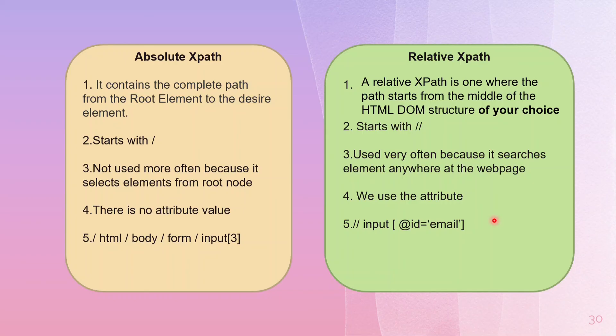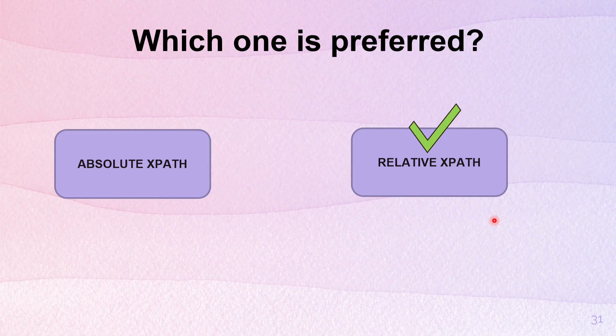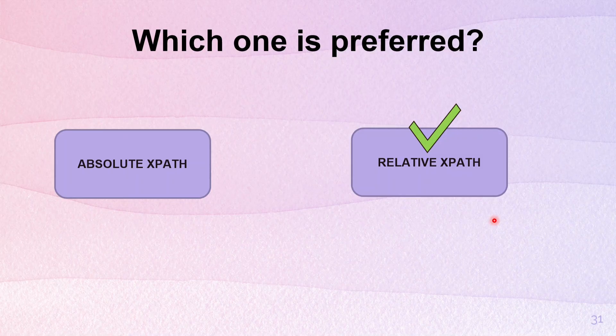XPath are of two types, but which one is mostly preferred? Obviously the relative XPath is mostly preferred. Because if the application is not stable and all the attributes are not stable, we cannot use absolute XPath — the developer might make changes frequently and the XPath will keep changing. That is why absolute XPath is not mostly used by automation testers. Whereas relative XPath is mostly used because the attributes used are fixed, and we are not constrained by the path from root to desired element.